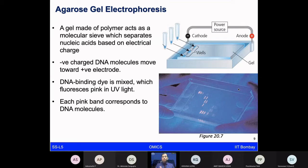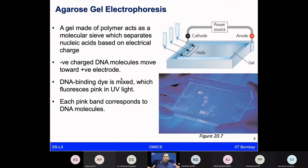In agarose gel electrophoresis, you exploit the phenomenon of electrophoresis. DNA's backbone is negatively charged due to its phosphate groups, so negatively charged DNA moves toward the positive electrode in an electric field. In this way, you can separate DNA in the electrophoretic field. You put the DNA in agarose beads, separate them like sieves, and use the electric field to separate DNA by size. To visualize it, you use UV light or fluorescent dyes that reveal the pattern of the DNA.